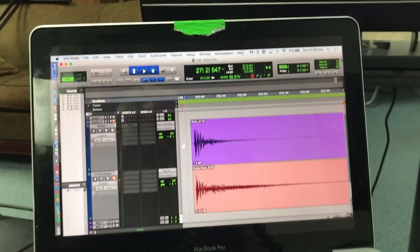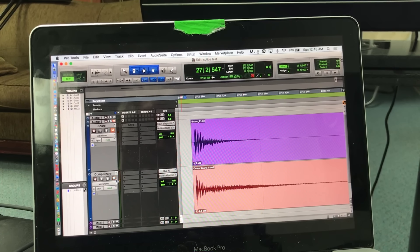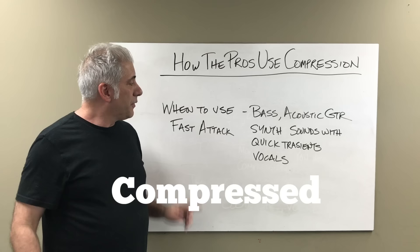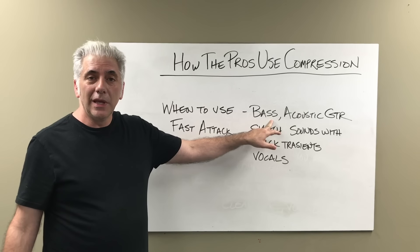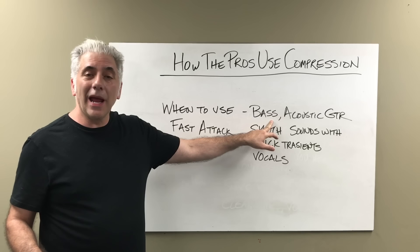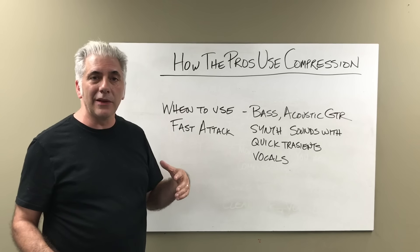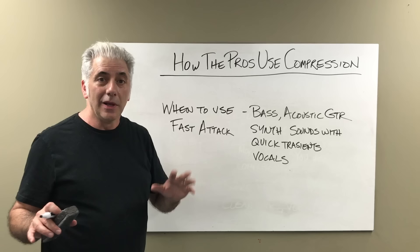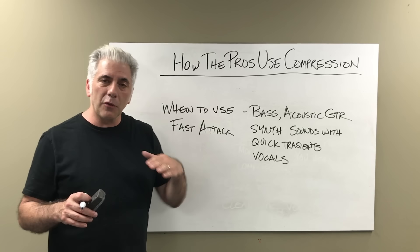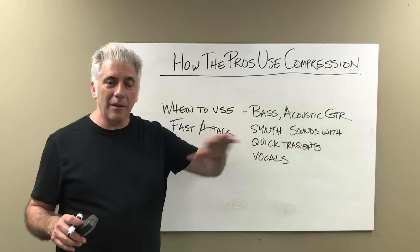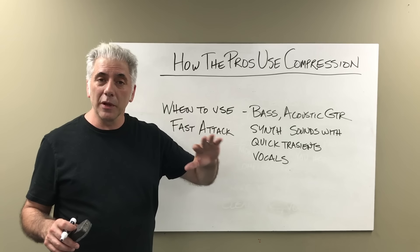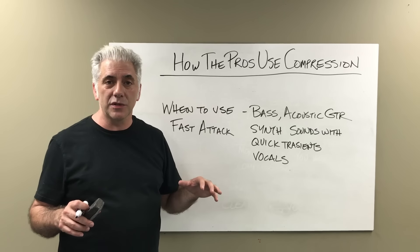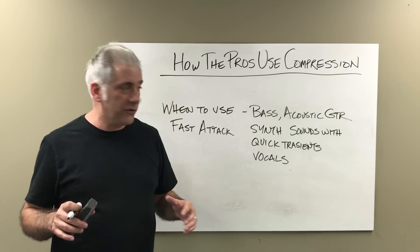The uncompressed snare has hardly any sustain. This is a very compressed snare — notice how much longer the waveform is. You can really hear the difference. Things you might want to use a fast attack on are really the bass. If you have a bass player that plays really inconsistently, you're going to want a fast attack time because those initial transients are really inconsistent — you can see those spikes all over in your DAW. Acoustic guitar is the same — if you want to level out the pick attack, a fast attack really works. Same with synth sounds with quick transients.